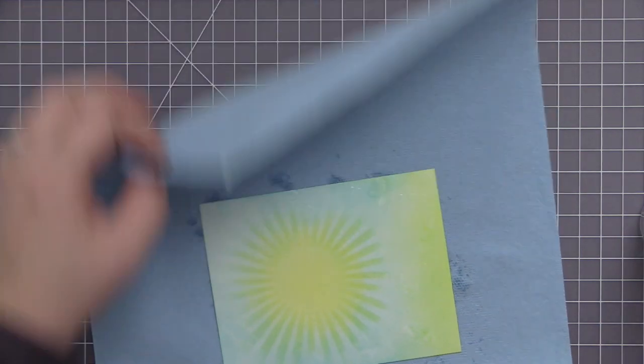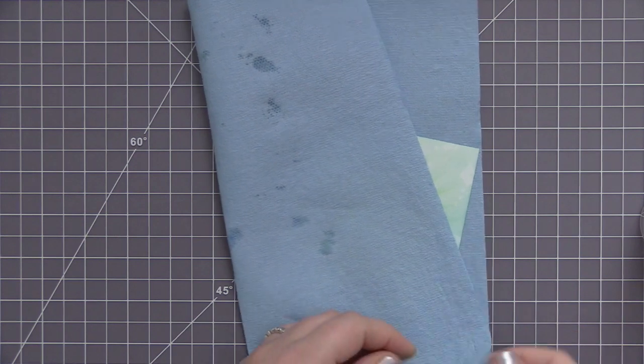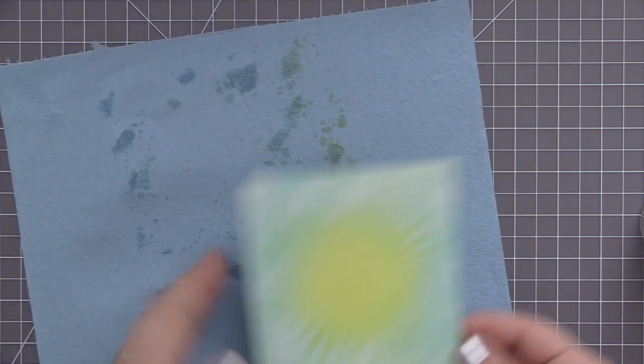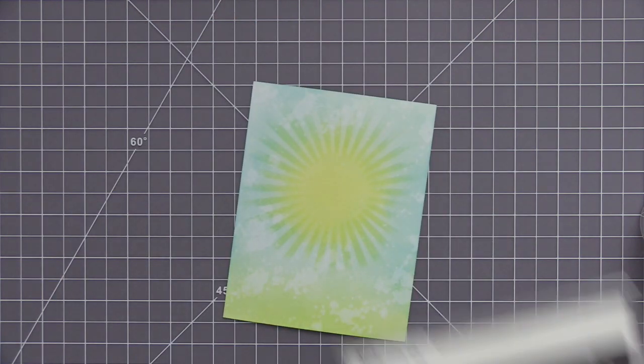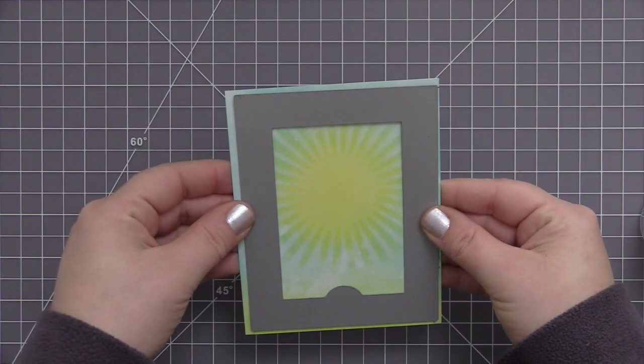I really love how the blue kind of blends with the yellow of the sun and gives kind of a green look there. I just think it looks really cool to have them blend into each other. I also added some water to the panel and used a paper towel to soak up the excess and that just gives it a really fun splotchy distressed look. I just love the look of that, especially on a sky background.